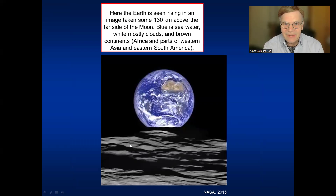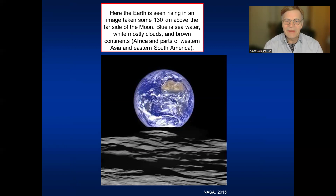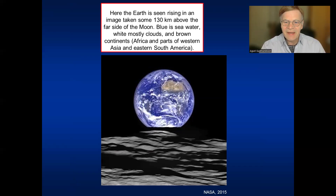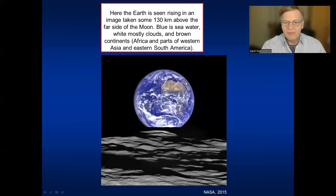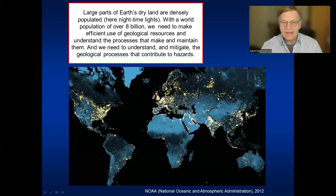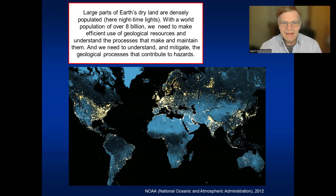The Earth is not very large. We see it here rising above the edge of the Moon. This photo is taken just above the far side of the Moon, around 130 kilometers above the far side of the Moon, and we see our home planet. The blue is the sea, the white is the clouds, and the brownest areas are the continents — we see mainly Africa here, part of South America, and a tiny part of Western Asia. It's not a big planet, and as we all know, it has very many people living on it. Today there are around 8 billion people living on the planet, and the nighttime lights indicate that parts of the continents are very densely populated.